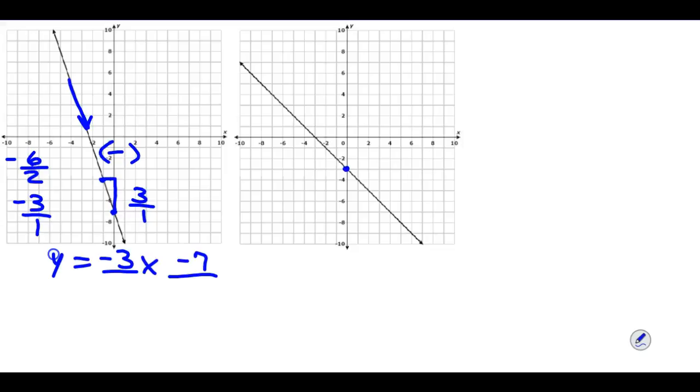For this very last one, we have a y-intercept of negative 3. And we find another point on the line. This looks like a good point.